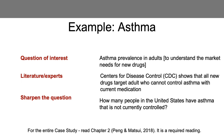So you modify your initial question to a better question: how many people in the United States have asthma that is not currently controlled, and what are the demographic predictors of uncontrolled asthma?